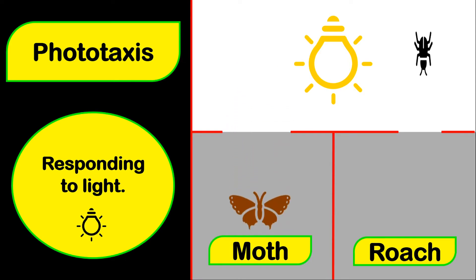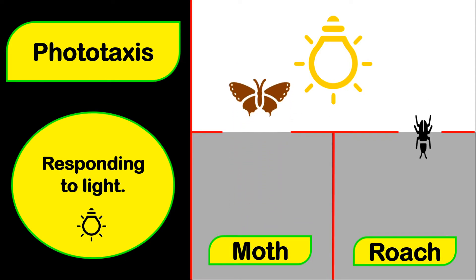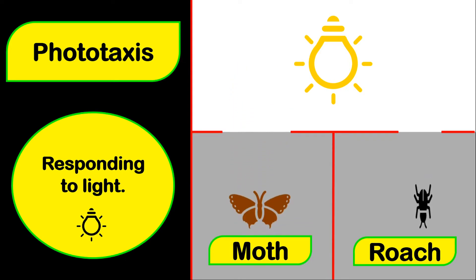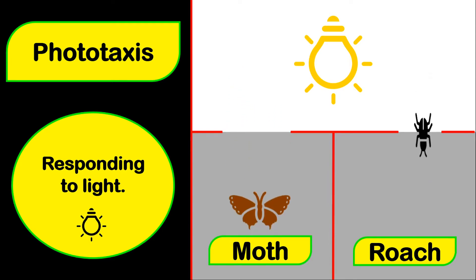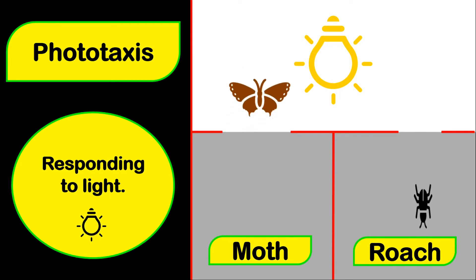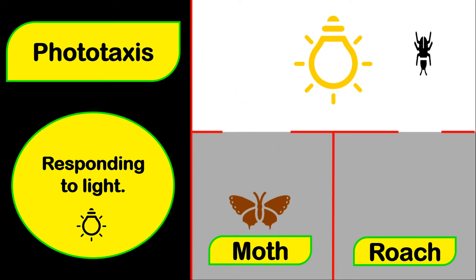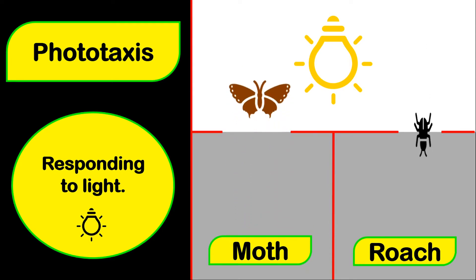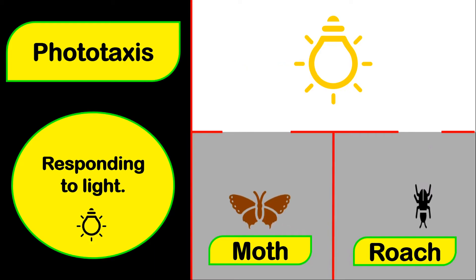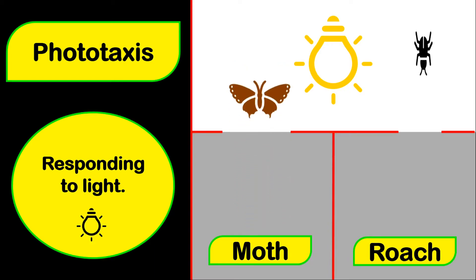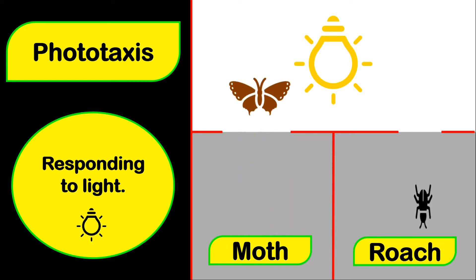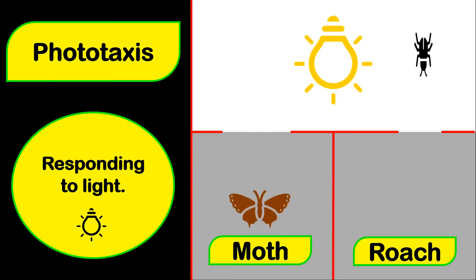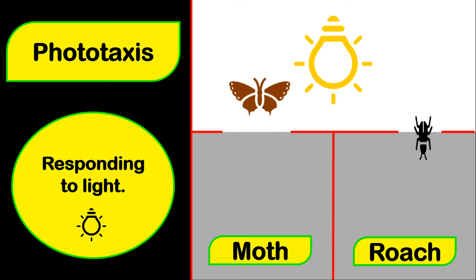Roaches, on the other hand, will move away from the light and go towards the dark. And so, roaches will display a negative phototaxis response.